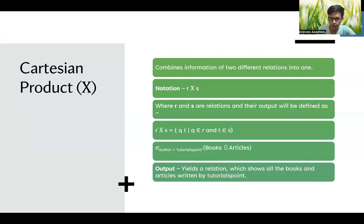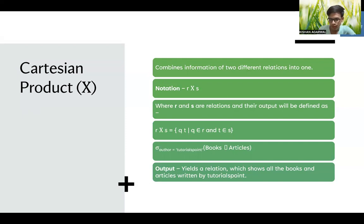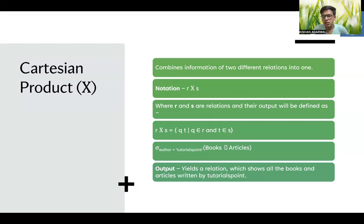The next operation is Cartesian product, denoted by ×. It combines information from two different relations into one. It is denoted as r × s, defined as the set of tuples (q, t) such that q belongs to r and t belongs to s. For example, σ_{author='Tutorials Point'}(books × articles) yields a relation showing all books and articles written by Tutorials Point.